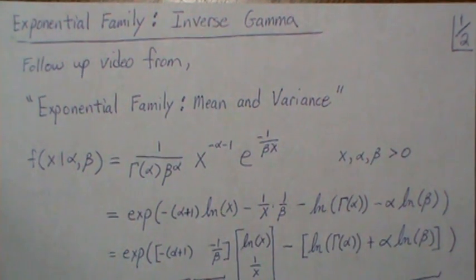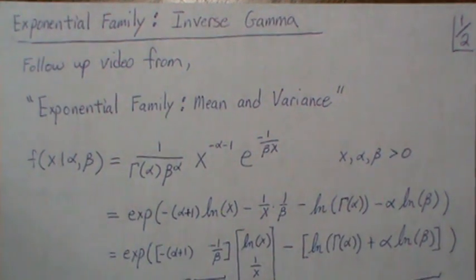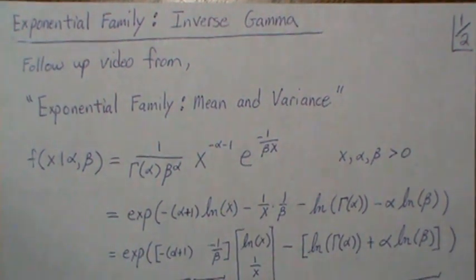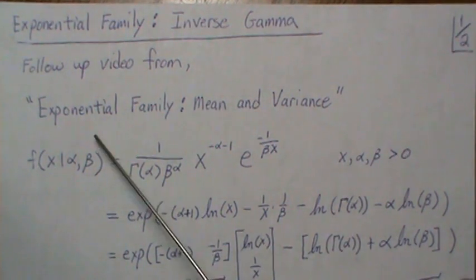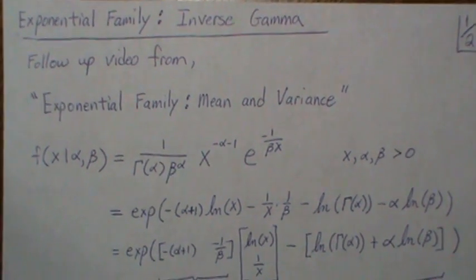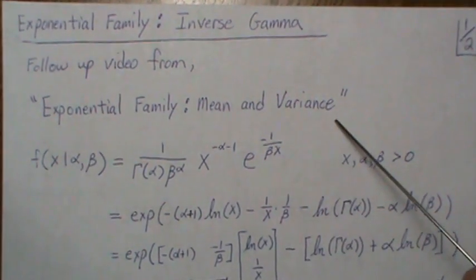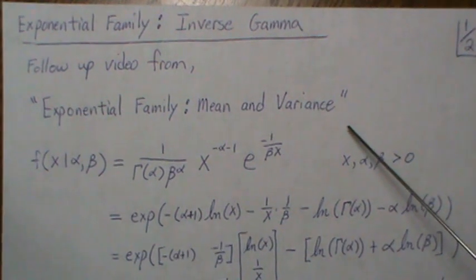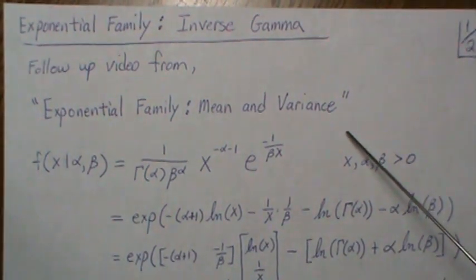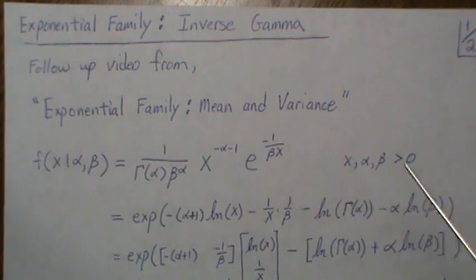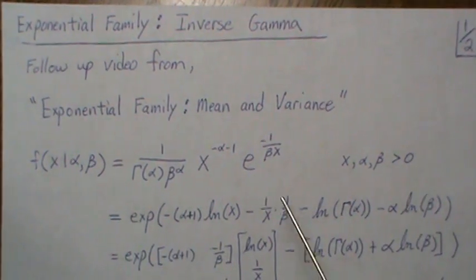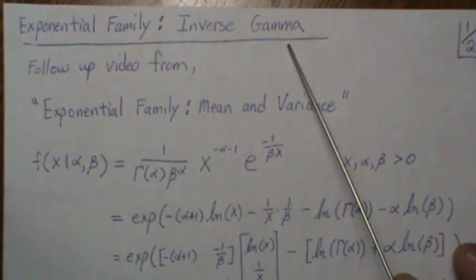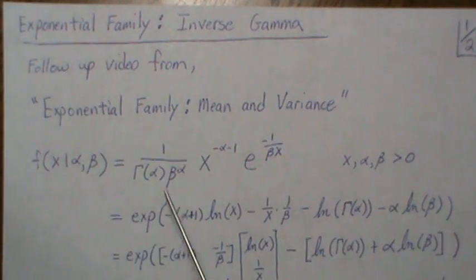In this video we look at the inverse gamma distribution, which is part of the exponential family. This is a follow-up to a video called 'The Exponential Family Mean and Variance,' where we generically derived the mean and variance of a general exponential family distribution. We're going to use those techniques for this specific case: the inverse gamma.